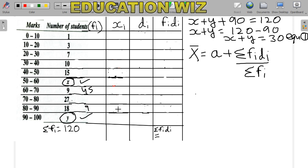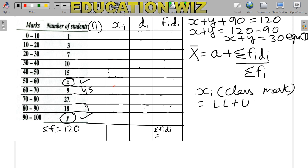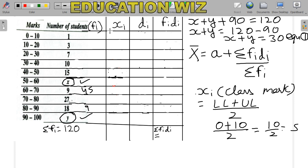First we fill the XI column, the class mark. XI means the class mark, also called mid-value or midpoint, from class 9. Its formula is: lower limit plus upper limit divided by 2. For the first class interval 0-10, lower limit is 0, upper limit is 10, so (0+10)/2 = 5. So the class mark for the first interval is 5.